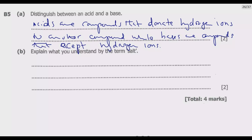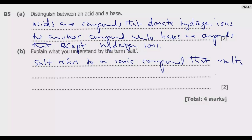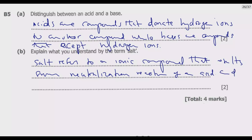Question B: explain what you understand by the term salt. What is salt? What is critical here is ensuring that you indicate that salt is a product from neutralization between an acid and a base. So salt in chemistry refers to a new ionic compound that results from a neutralization reaction of an acid and a base.